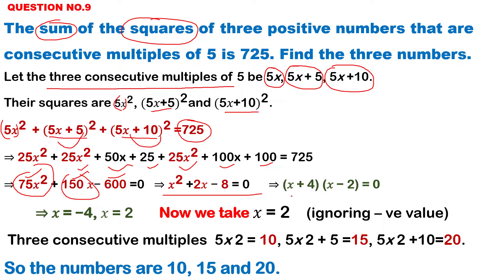By the factorization, the factors come: x plus 4 and x minus 2. So what is the value of x? x is equal to minus 4 and x is equal to 2.